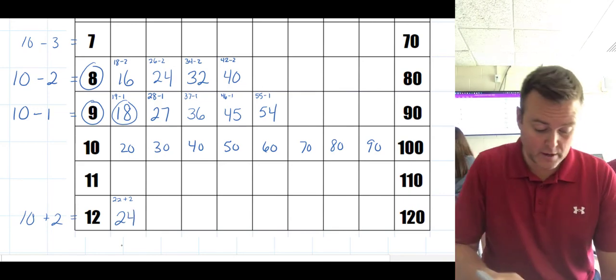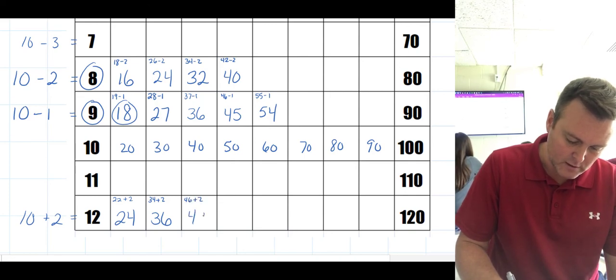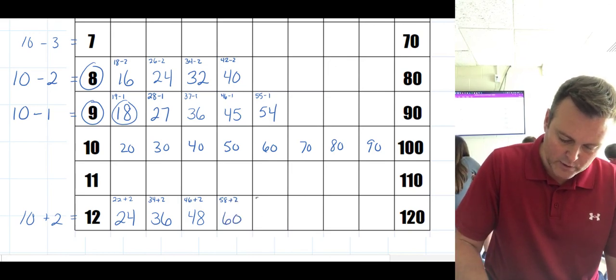10 more than 24 is 34 plus 2 is 36. 10 more is 46 plus 2 is going to be 48. 10 more is 58 plus 2 is going to give us 60. 10 more is 70 plus 2 is going to give us 72, and so on and so forth.